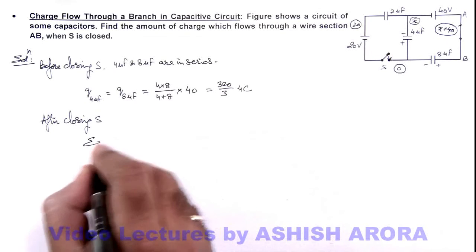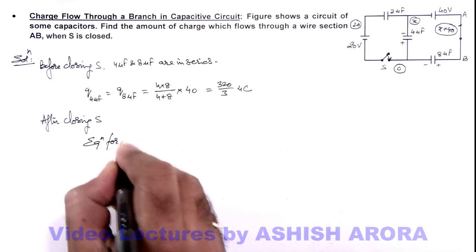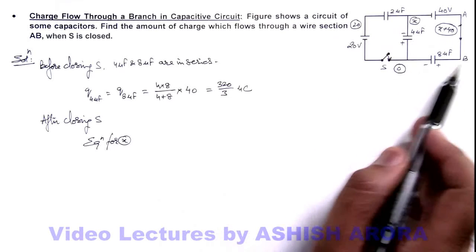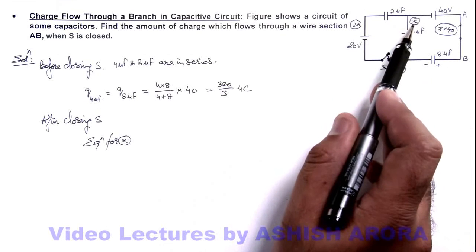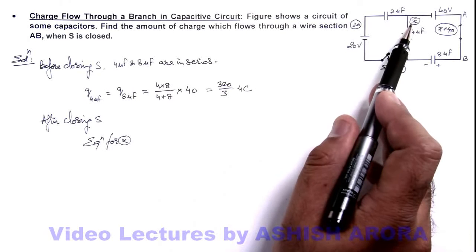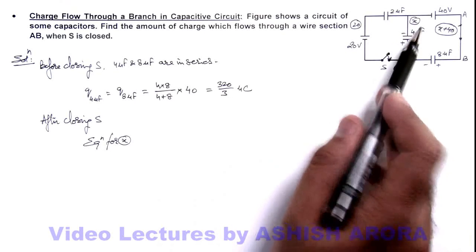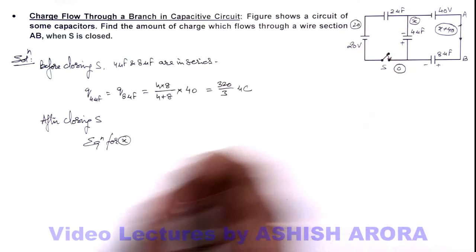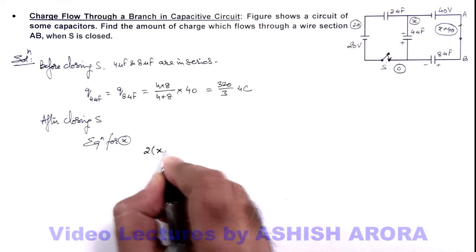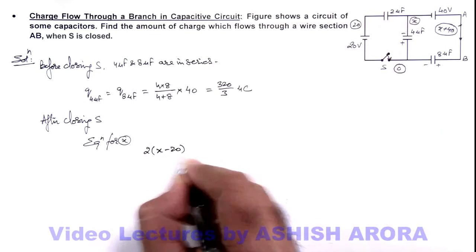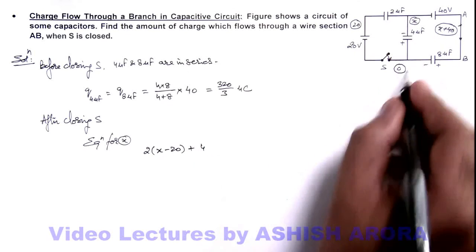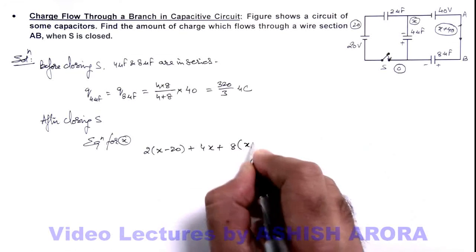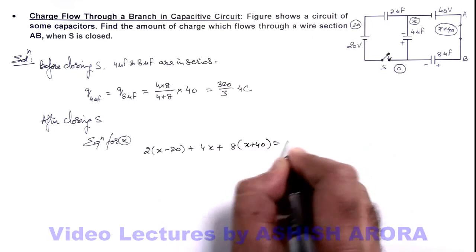Now we can write down the equation for x, which will give us the value of potential x where three plates are connected to the node where potential is taken to be x. The sum of these three charges needs to equal zero, so this will be 2(x-20) plus 4(x-0) plus 8(x+40-0) equals zero.